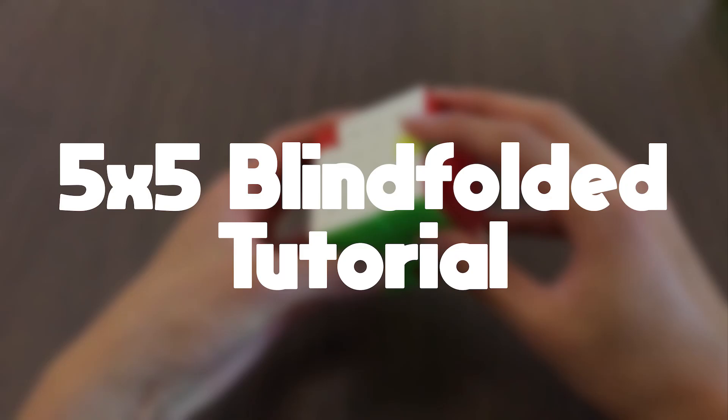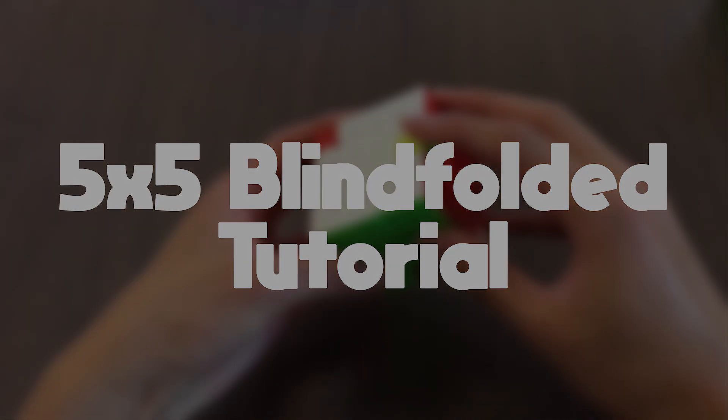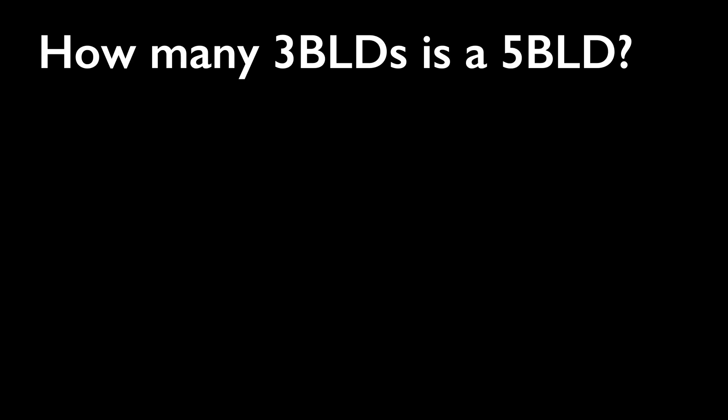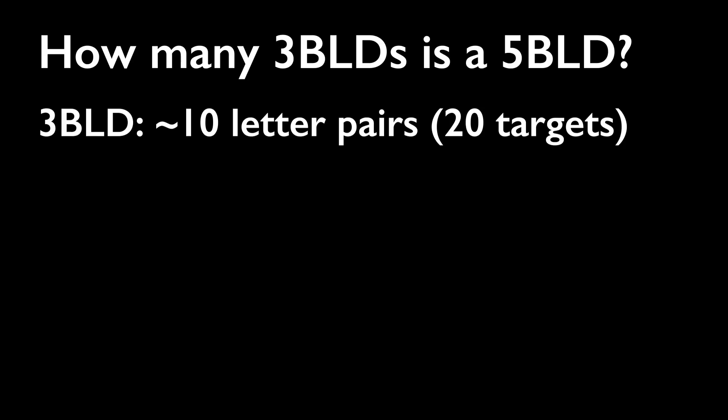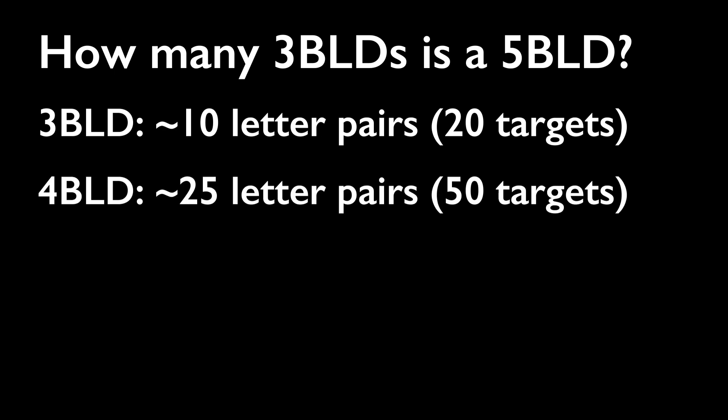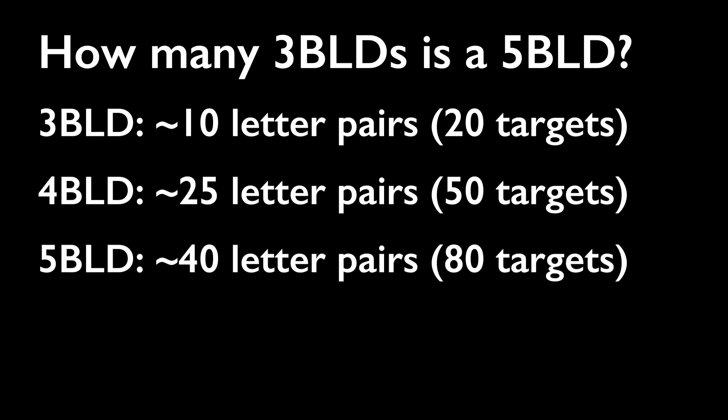In this video, I will teach you the techniques you need to solve a 5x5 blindfolded. The first thing everyone asks is, how many 3-blinds is a 5-blind equivalent to? Well, a 3-blind is around 10 letter pairs or 20 targets. A 4-blind is around 25 letter pairs, or 50 targets. And a 5-blind is around 40 letter pairs, or 80 targets.